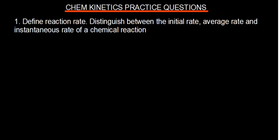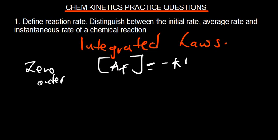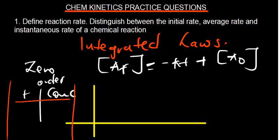One more important topic is the integrated rate laws. For a zero order reaction, the equation is: final concentration = −kt + initial concentration. On a graph of concentration versus time, a zero order reaction gives a straight line with a negative gradient.